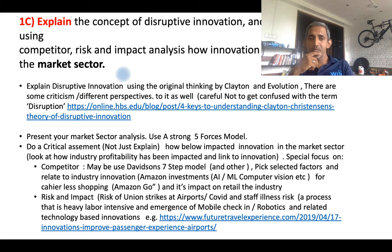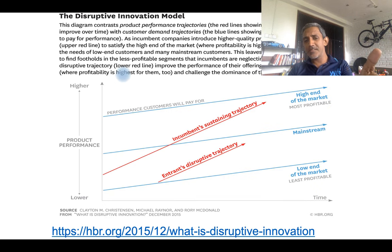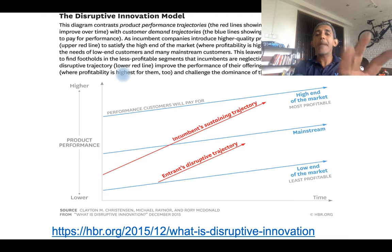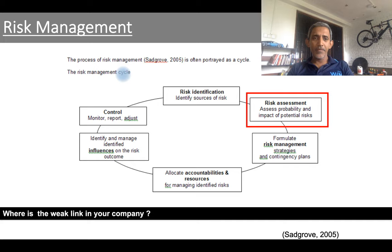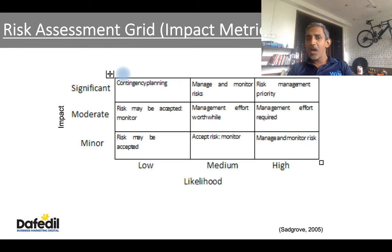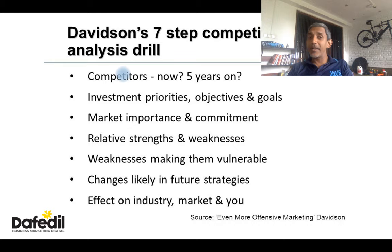Go through the flow of the task — it will give you an idea of how to start, build up, and conclude. Clayton Christensen is the godfather of the disruptive innovation concept. You'll map different competitors at different places using his model. Also consider risk tools — how to assess and profile certain risks — referencing authors like Sat Grove. Without authors and proper referencing, you cannot write a professional assignment. Davidson's seven-step competitor drilling framework can help you understand competition and its impact on innovation in your market sector.